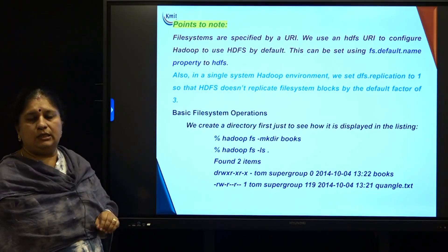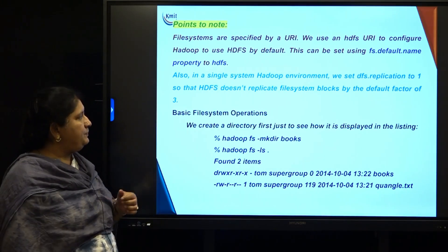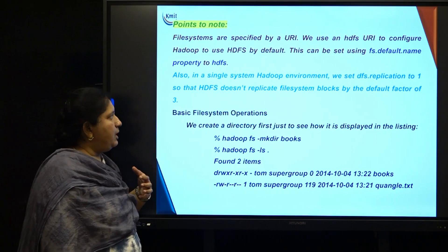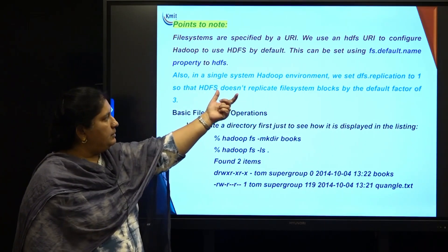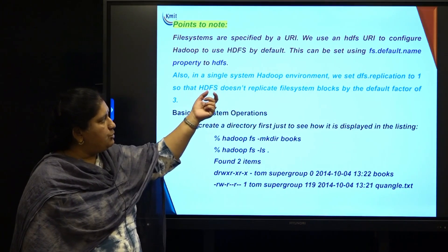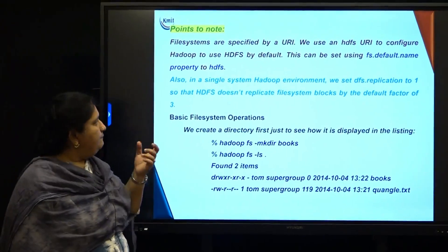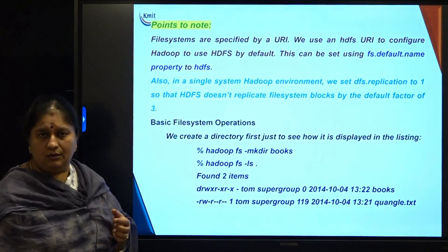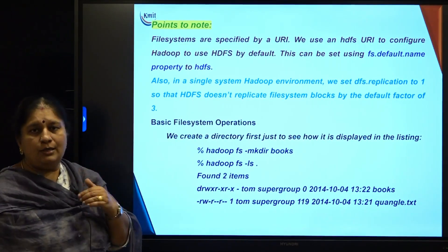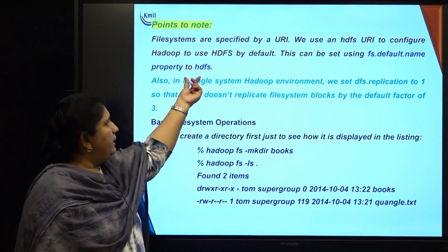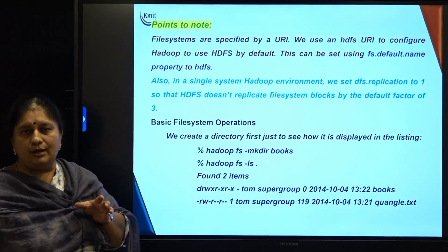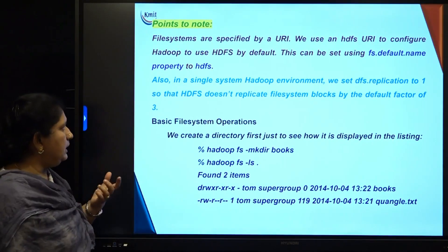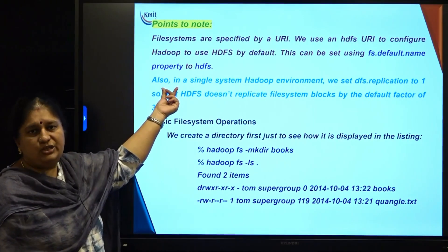Whenever you want to work with HDFS — Hadoop Distributed File System — you need to specify the HDFS with a URI, Uniform Resource Identifier. You have to configure a property in the configuration file called fs.default.name, which is set to the URI of the HDFS. By default it will be Hadoop, but under pseudo distributed mode, the HDFS can be configured to HDFS. Henceforth, for the Hadoop URI, I will be using HDFS in lowercase.